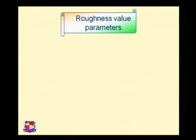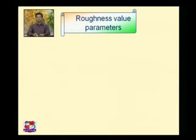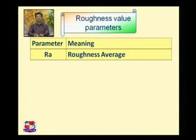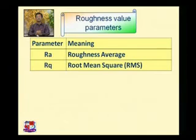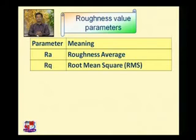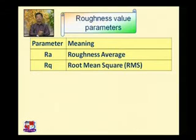Now, roughness value parameters: RA means roughness average, expressed in millimeter or micron as the height difference between peaks and valleys. The formula is: RA = (y1 + y2 + y3 + ... + yn) / n — that is, the average of all height values. RQ means root mean square (RMS) value.